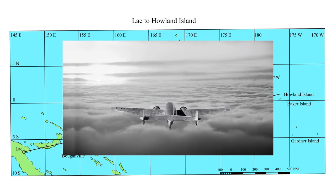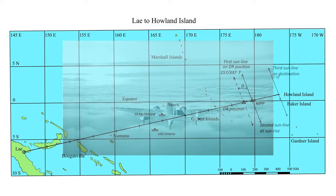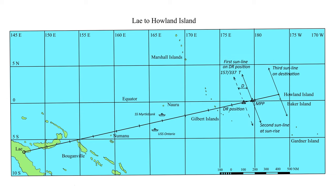In our case the direction is 067 degrees true, which gives the sun line 157-337. Next, note the time when the first rays of sunlight emerge above the horizon. Correct the timing for the height of the aircraft above sea level to give the time of sunrise at sea level. Compare the actual time of sunrise with the calculated time at the dead reckoning position.